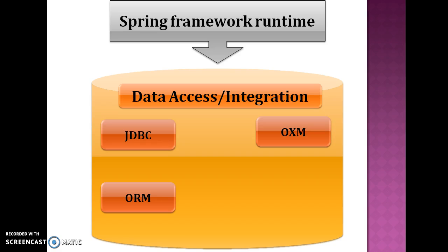The next module is OXM, also called object-to-XML mapping. The OXM module is available in Spring for easy mapping between Java objects and XML documents. This module is extensible and provides integration with various popular frameworks like JAXB, Castor, XMLBeans, JiBX, and XStream.